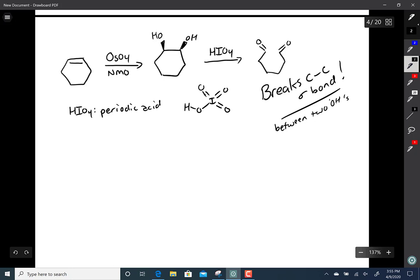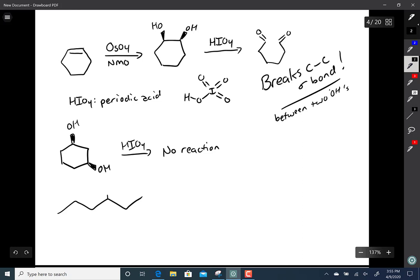It's in group seven, it's a halogen. And so, if you want to remember how many bonds to oxygen HIO4 has, you just have to remember that it's in group seven and you'll have seven bonds to oxygen in HIO4.